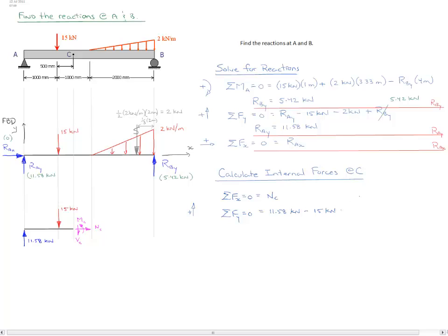And finally we subtract our shear force at C. And this allows us to solve for V at C and get a value of negative 3.42 kilonewtons.